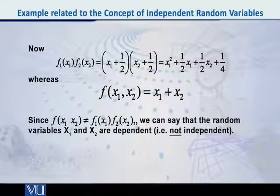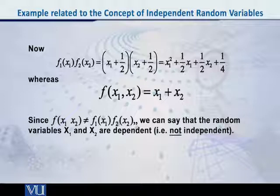And what is our f(x₁, x₂)? That is simply x₁ plus x₂. So there is no way we can say that that product is equal to f(x₁, x₂). So what is our final conclusion? The conclusion is that for this particular joint probability density function f(x₁, x₂), the two random variables x₁ and x₂ are not independent.